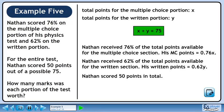Nathan scored 50 points in total. It follows that Nathan's points on the multiple choice portion plus his points for the written portion must add up to 50. The equation for this is 0.76x plus 0.62y equals 50.